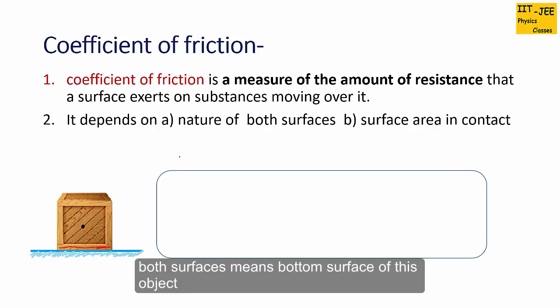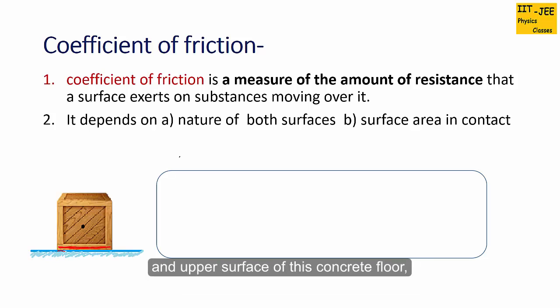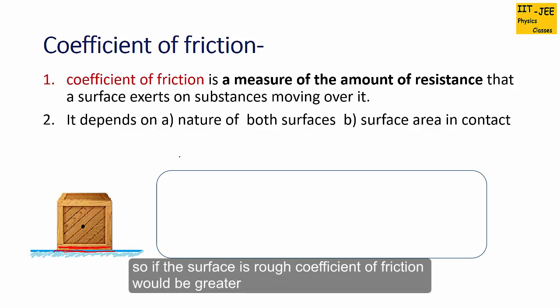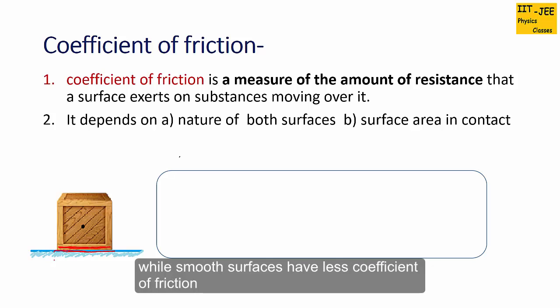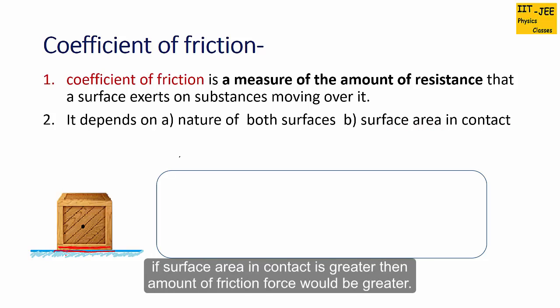Coefficient of friction depends on the nature of both surfaces — the bottom surface of the object and the upper surface of the floor. If the surface is rough, the coefficient of friction would be greater. Rough surfaces have greater coefficient of friction while smooth surfaces have less. It also depends on surface area in contact — greater surface area means greater friction force.